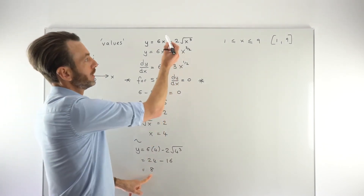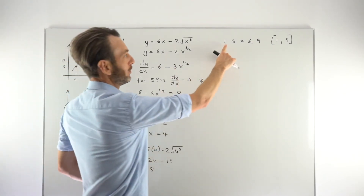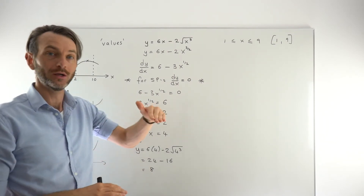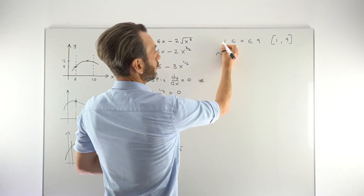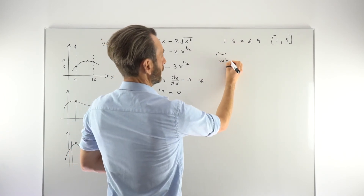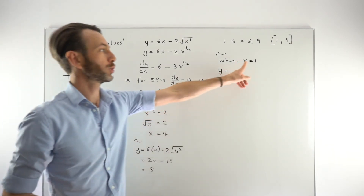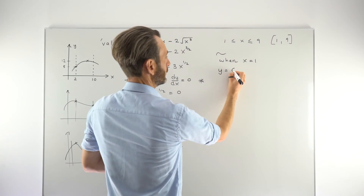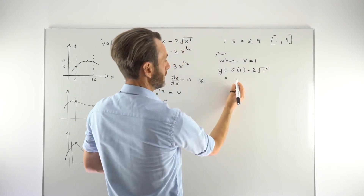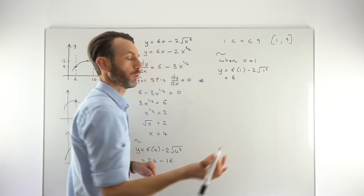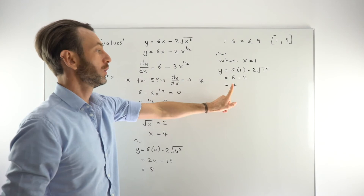That y value of 8 is the only value we know so far in that interval, so at the moment it's both the maximum and minimum. We now need to test the endpoints to see whether they're higher or lower. Let's start with the left endpoint, x equals 1. Substituting into the original function: 6 times 1 minus 2 times the square root of 1 cubed equals 6 minus 2, which is 4. So when x is 1, y is 4.